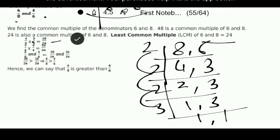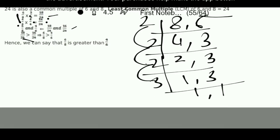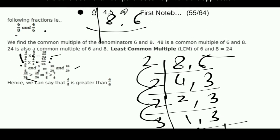To get 24 from 8, we multiply by 3. To get 24 from 6, we multiply by 4. So 6 upon 8 multiplied by 3 gives 18 upon 24, and 4 upon 6 multiplied by 4 gives 16 upon 24. Now comparing: 18 upon 24 is greater. Since 18 upon 24 is actually 6 by 8, therefore 6 by 8 is greater than 4 by 6.